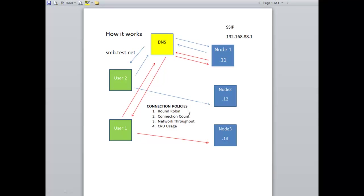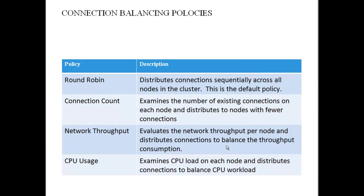There are four policies you can configure to control connections to the cluster: round robin, connection count, network throughput, and CPU usage. Round robin distributes connections sequentially across all nodes in the cluster — that's the default. Connection count examines the number of existing connections on each node and distributes to nodes with fewer connections. Network throughput evaluates the network throughput per node and distributes connections to balance throughput consumption. CPU usage examines CPU load on each node and distributes connections to balance the CPU workload.